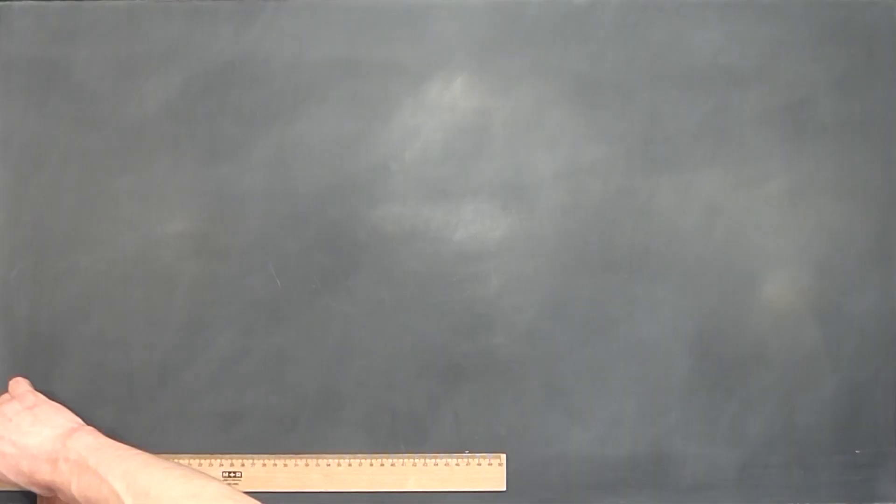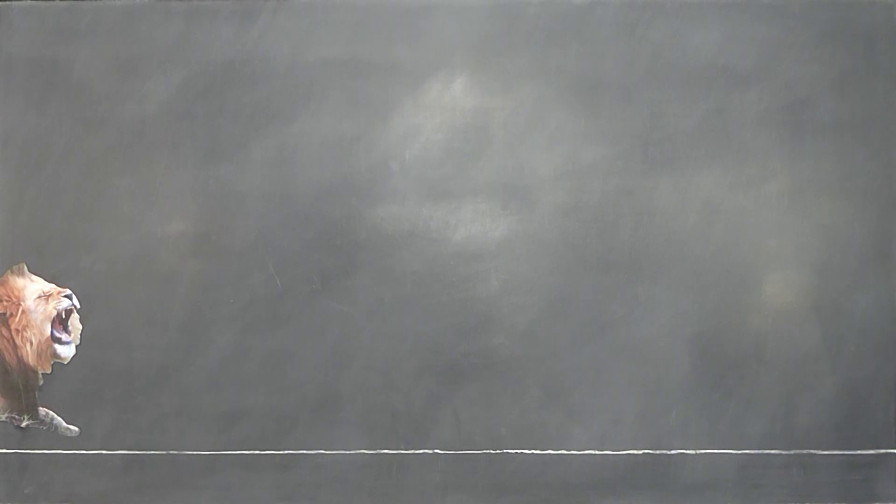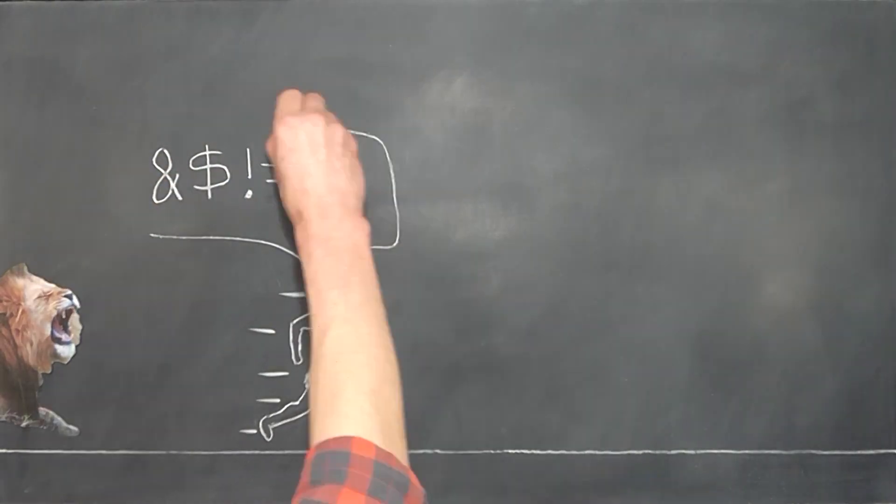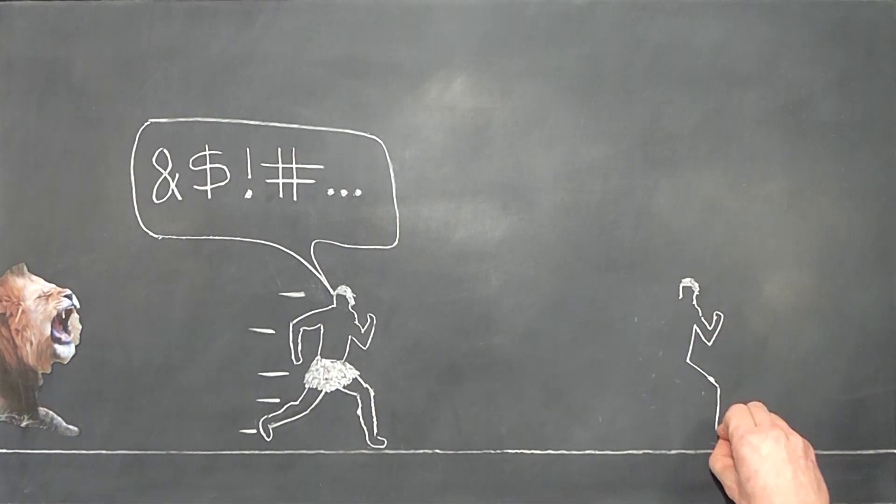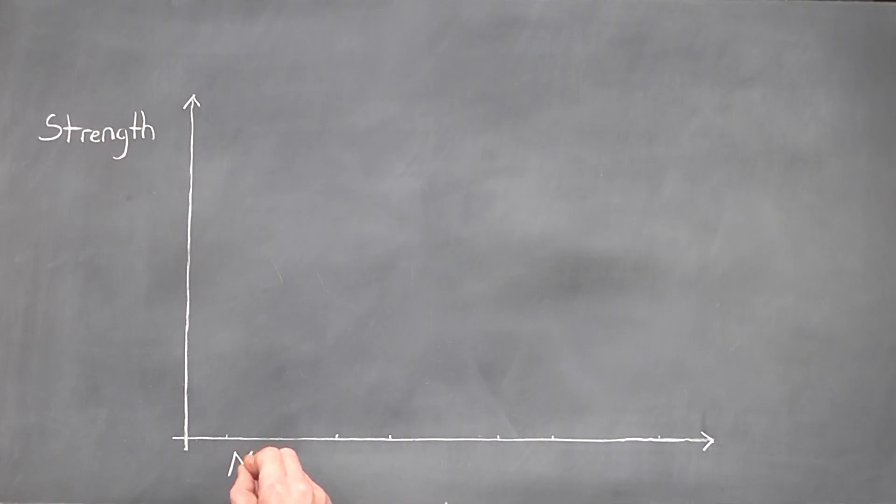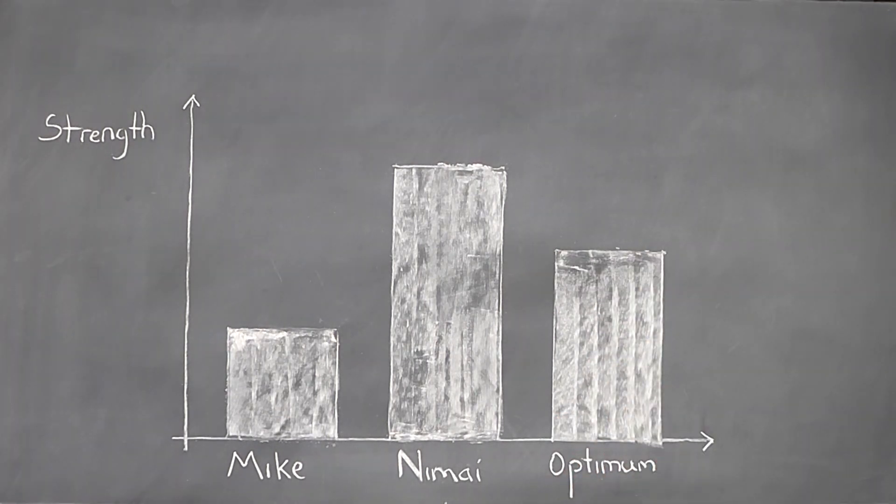The more obvious answer is Nimai. He's stronger and therefore better able to build things and win fights. But if we take a step back, what if the tribe lives in an area with a large population of lions? Maybe Nimai has the strength needed to win fights, but due to his excessive muscles, lacks the stamina needed to run away from the lions, which isn't a problem for Mike.